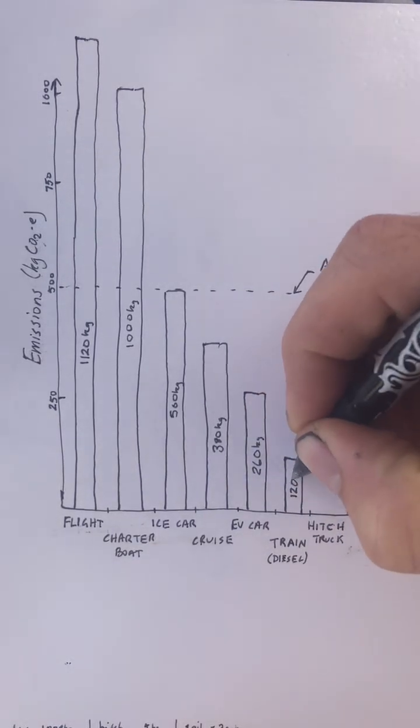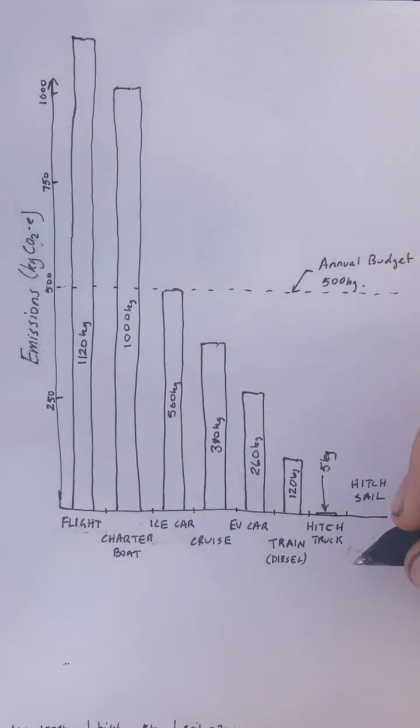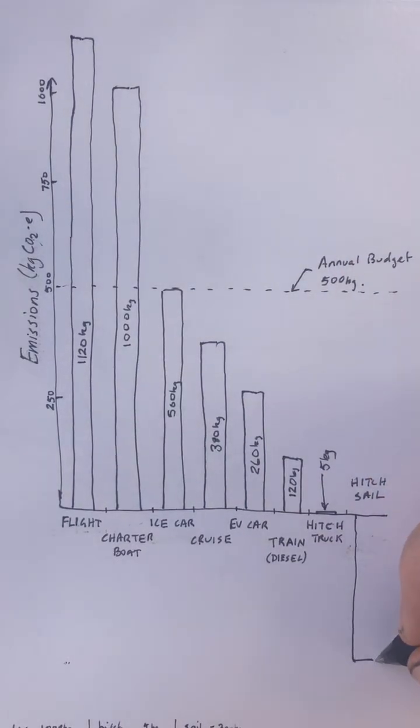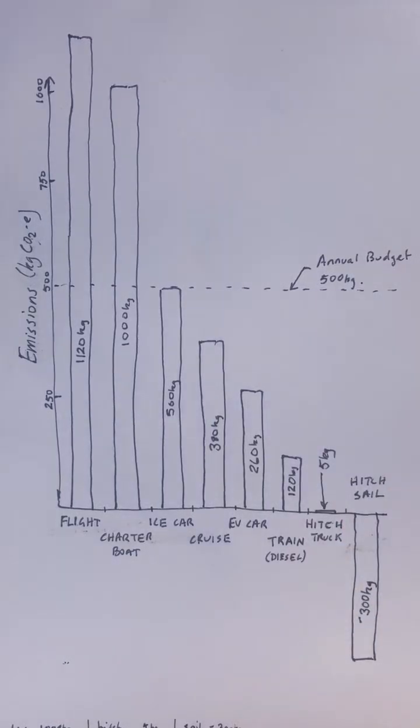A diesel train, about 120 kilograms. Finally, hitchhiking on a sailing vessel, I have as a negative because my presence has allowed additional sailing of about 5%. Not that I add this to my budget.